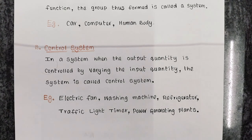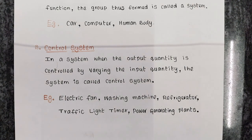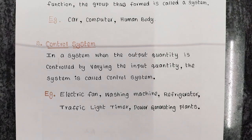In a system, when the output quantity is controlled by varying the input quantity, the system is called a control system. Examples include electric fan, washing machine, refrigerator, traffic light timer, and power generating plants.